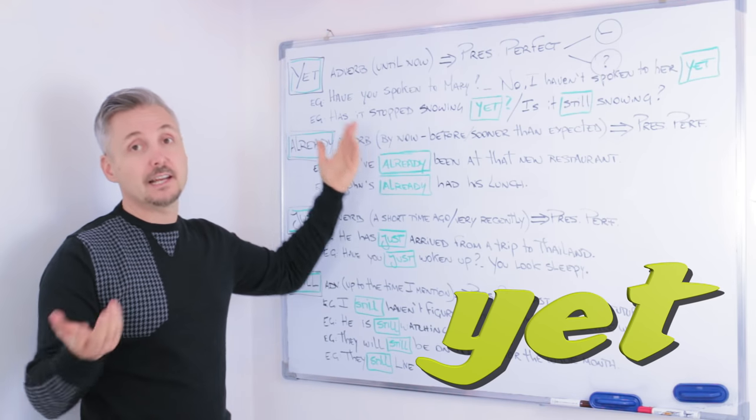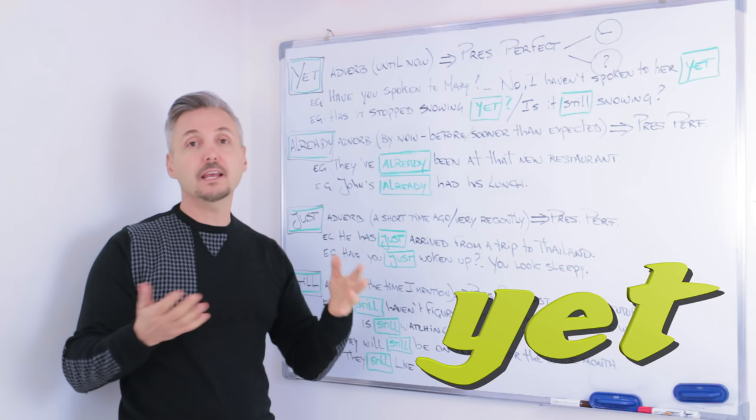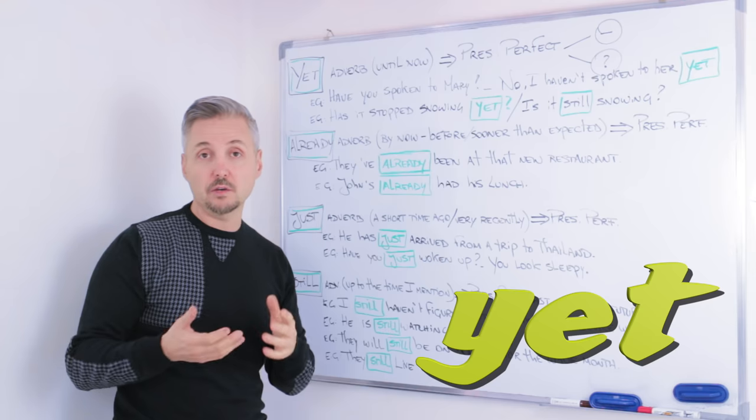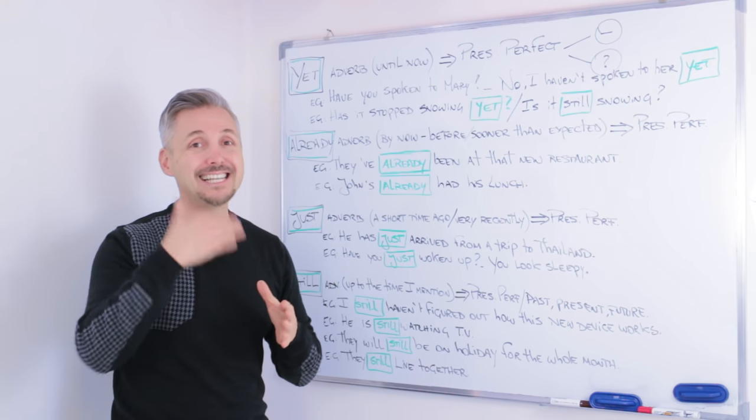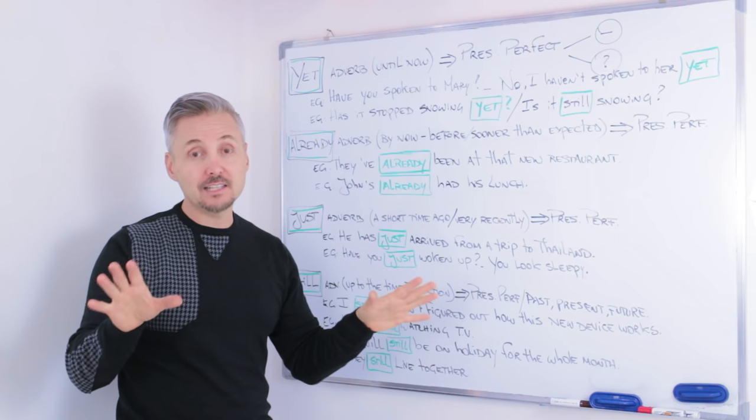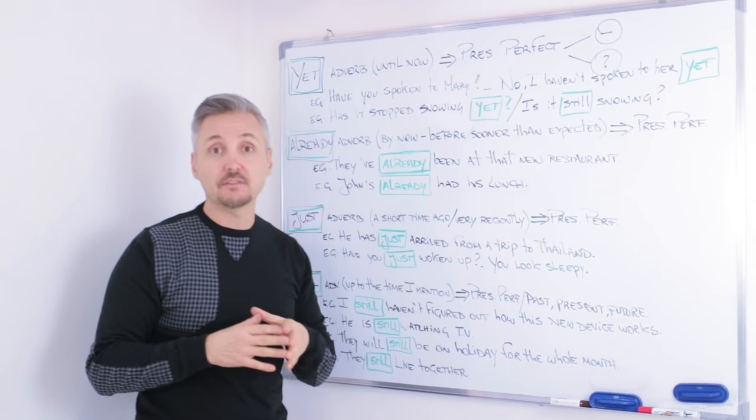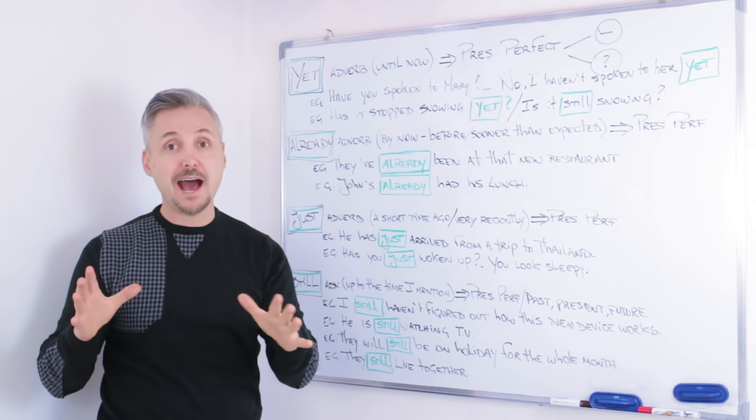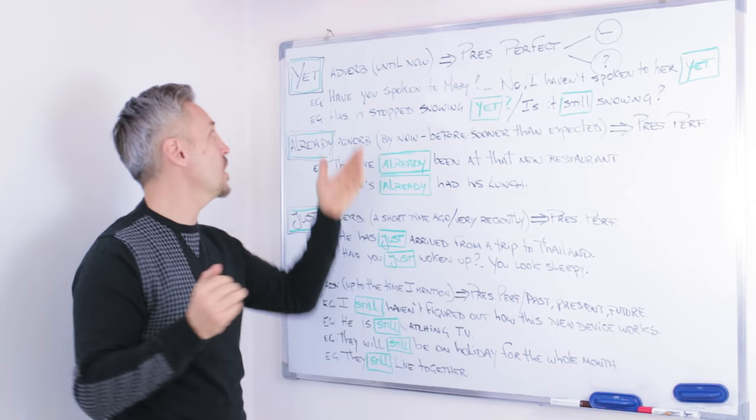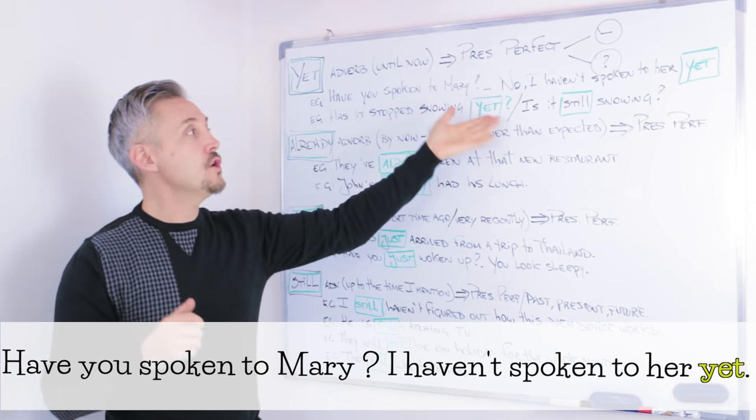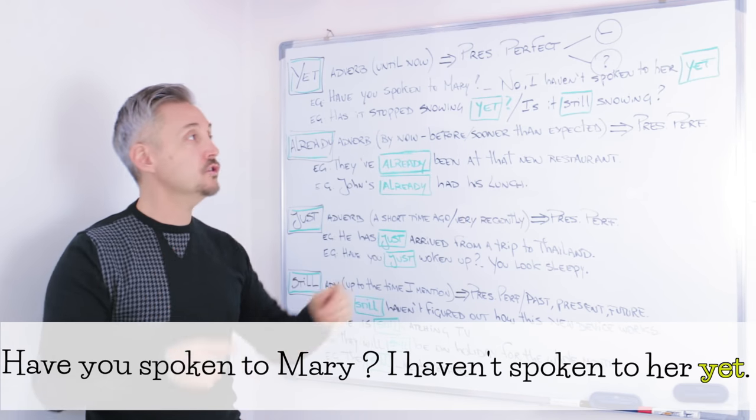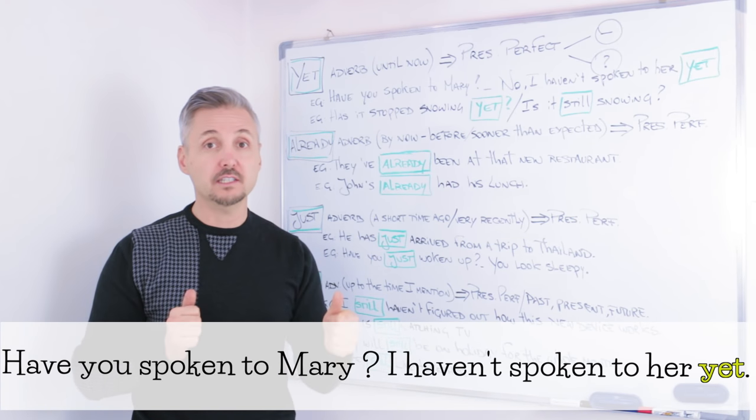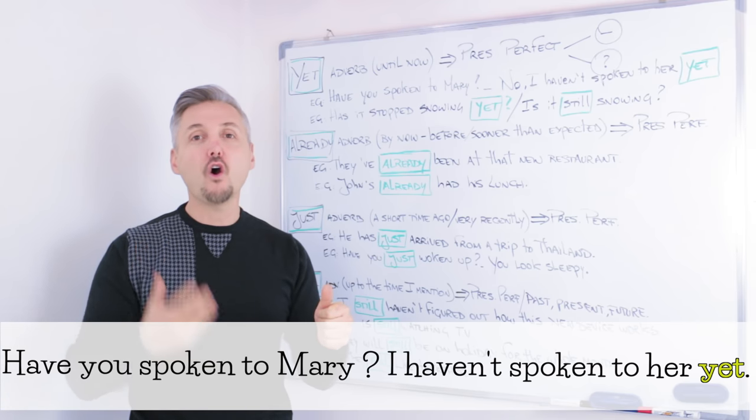Yet. Yet is an adverb and it means until now. Obviously, we use with the tense Present Perfect Simple or Present Perfect Continuous. We use this adverb at the end of the sentence and it has to be a negative or interrogative sentence. So pay close attention to this. It means until now. The example that I gave you was, have you spoken to Mary? No, I haven't spoken to her yet. Remember to put yet at the end. And to use yet only for interrogative sentences or negative sentences.